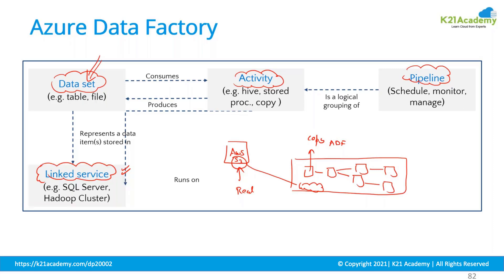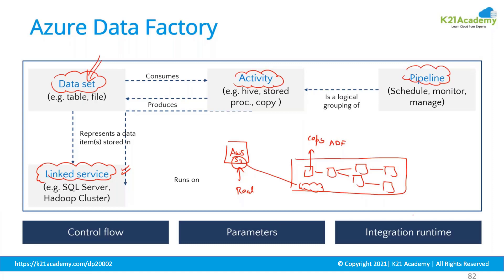Those are the core components of Data Factory. A couple more important terms: there is a concept called IR — Integration Runtime. Whenever any task is being done, such as pulling data from AWS or extracting from Google Cloud Platform or on-premises, compute resources are utilized behind the scenes — some server pulls that information and writes it to the destination. That server or compute running behind the scenes is called the Integration Runtime.